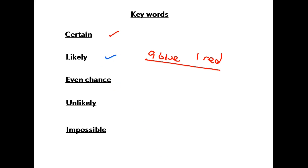Even chance. If we go back to that coin we tossed, we are going to get a head or a tail. The chances of getting heads are one chance out of two. It's an even chance as to whether you will get a head or a tail.